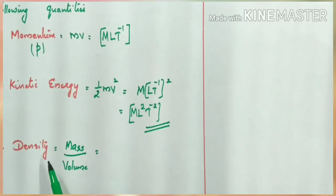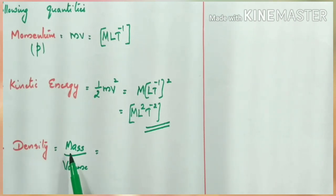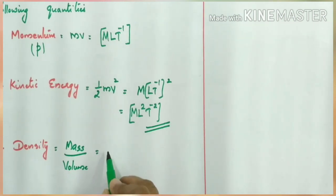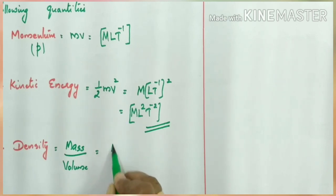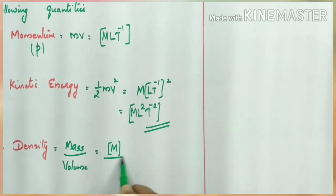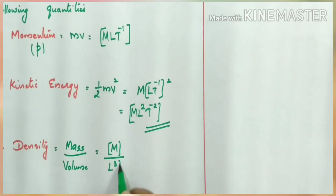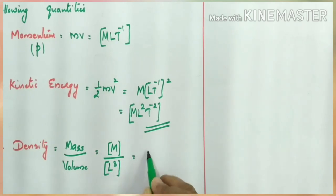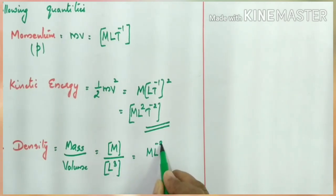Next, density. Density is mass divided by volume. The dimension of mass is M and the dimension of volume is [L³]. So the dimensional formula for density is [ML⁻³].